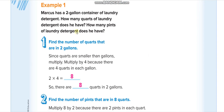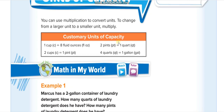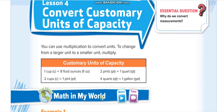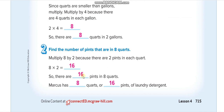The first example: Marcus has a two-gallon container of laundry detergent — how many quarts? One gallon is four quarts, so two gallons is two times four, which is eight quarts. Now converting the quarts into pints: one quart is equal to two pints, so eight quarts times two is sixteen pints. So eight quarts equals sixteen pints.